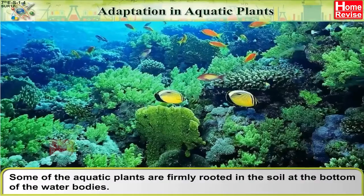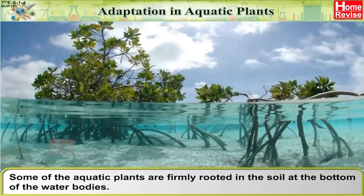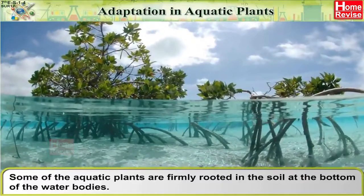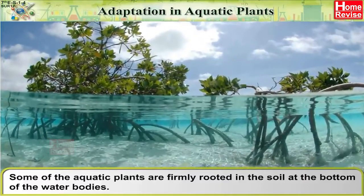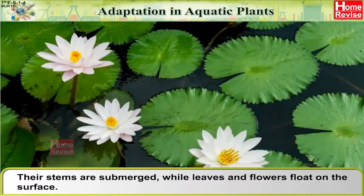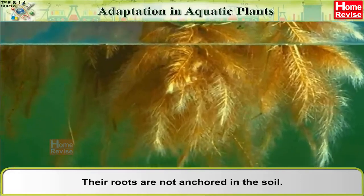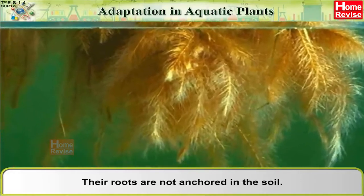Some aquatic plants are firmly rooted in the soil at the bottom of water bodies. Their stems are submerged while leaves and flowers float on the surface. However, some plants are entirely afloat — their roots are not anchored in the soil.